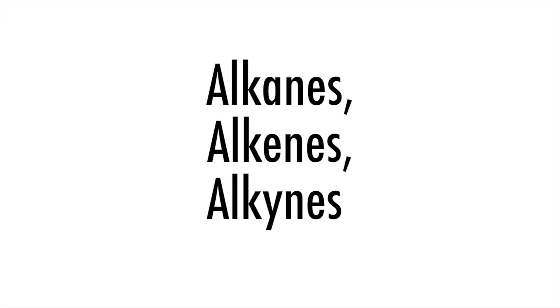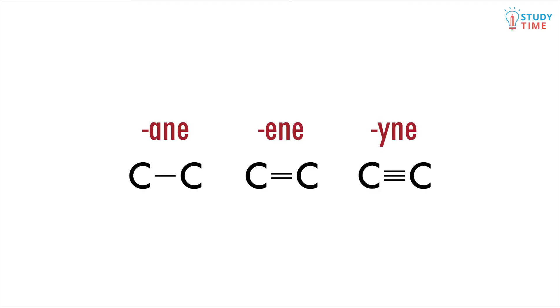We are going to start our look into specific organic compounds by discussing those which only contain carbon and hydrogen. We already talked about how these are named — we use the suffix '-ane' when it's all single bonding, '-ene' where there's a double bond present.